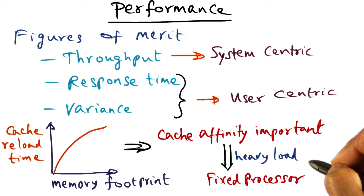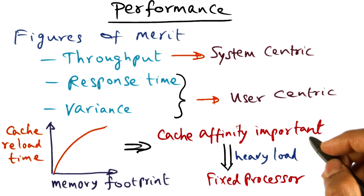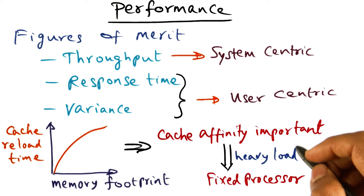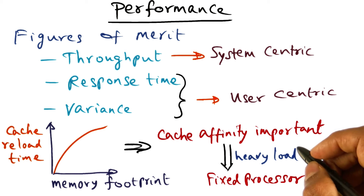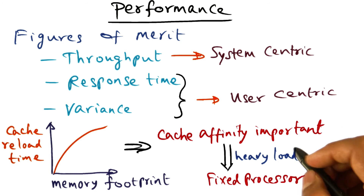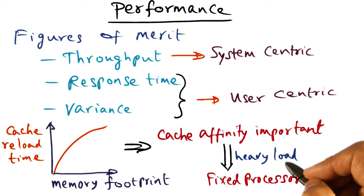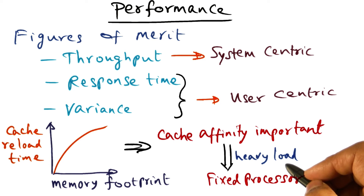It may not always be the case that the same scheduling policy applies in all circumstances. A real agile operating system may choose to vary the scheduling policy based on the load as well as the current set of threads that need to run on the system.